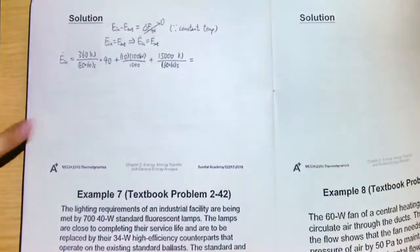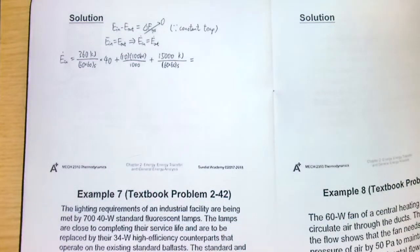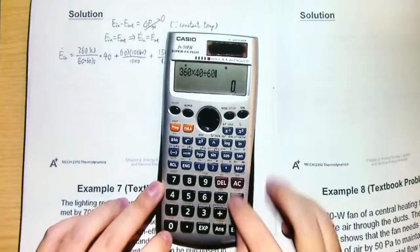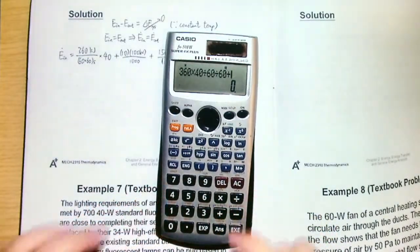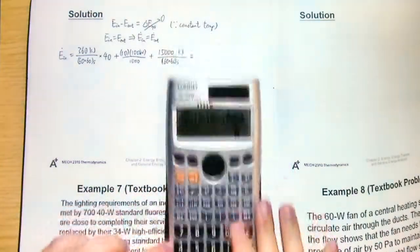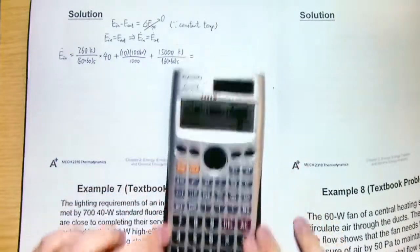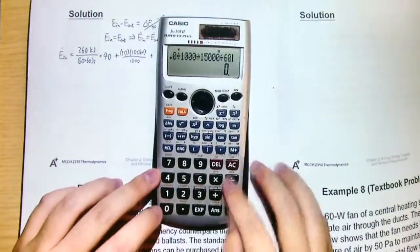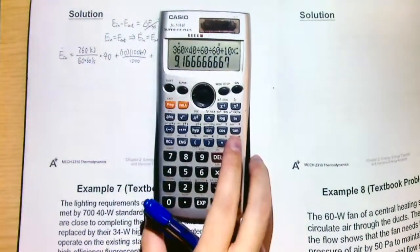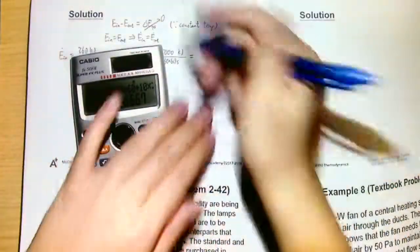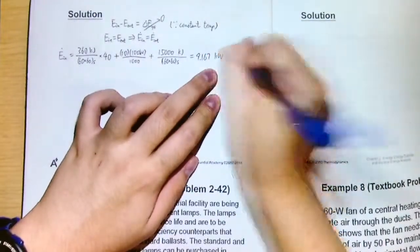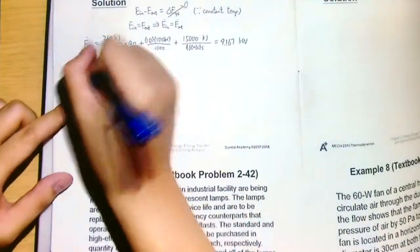So what's the answer? Let me get a calculator. So 360 times 40 divided by 3600, plus 10 times 100 divided by 1000, plus 15,000 divided by 60 divided by 60. We get this value, so we will get 9.167 kilowatt. We get this value for E_in.